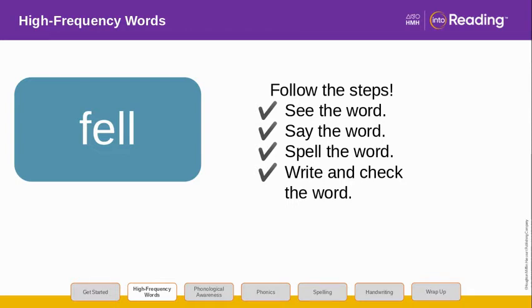Look at the letters in the word. Let's spell it. F-E-L-L. Fell. In this word, the letter E stands for the short E sound. Blend with me. F-E-L. Fell. Now write the word fell. Try to write it without looking. Then check it.